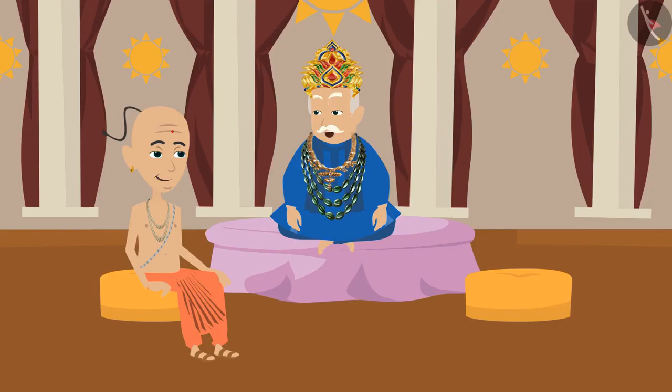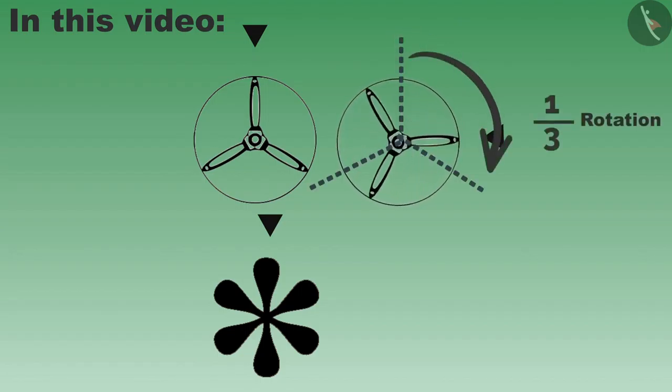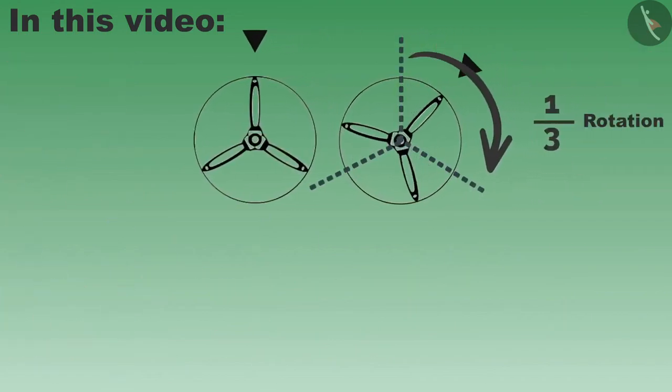So in this video we have learned about some objects and their shapes which do not change after one-third and one-sixth rotation. The shapes and things which look the same even after one-third rotation represent one by three rotational symmetry.